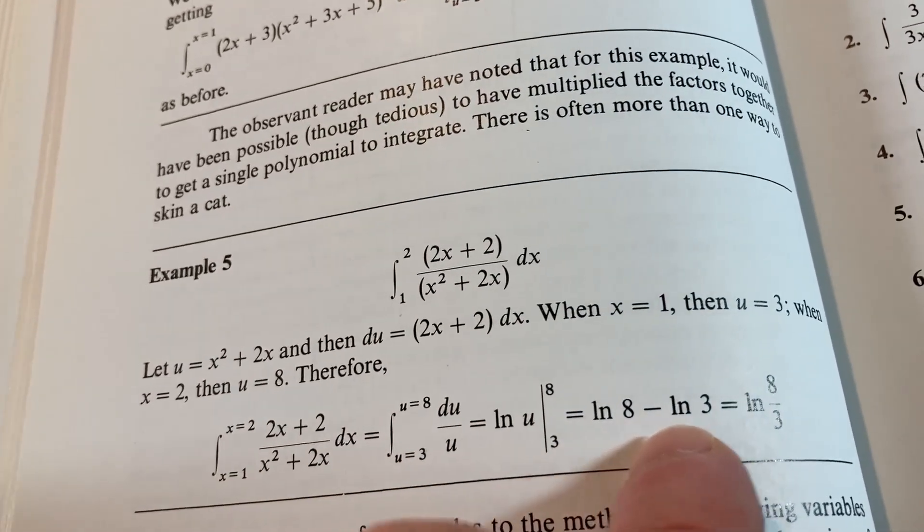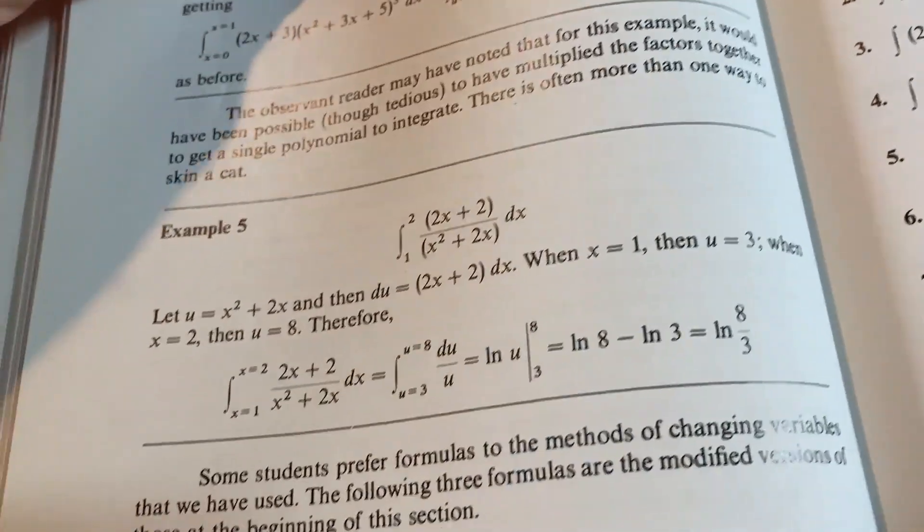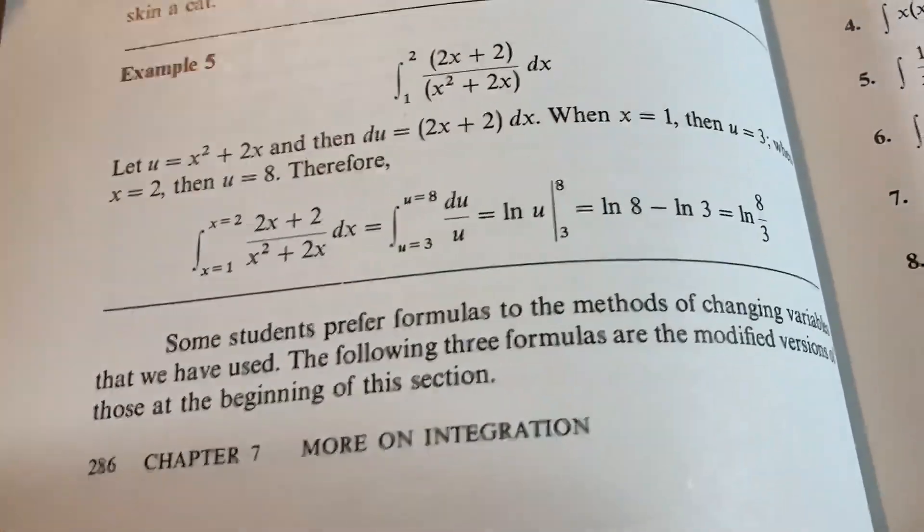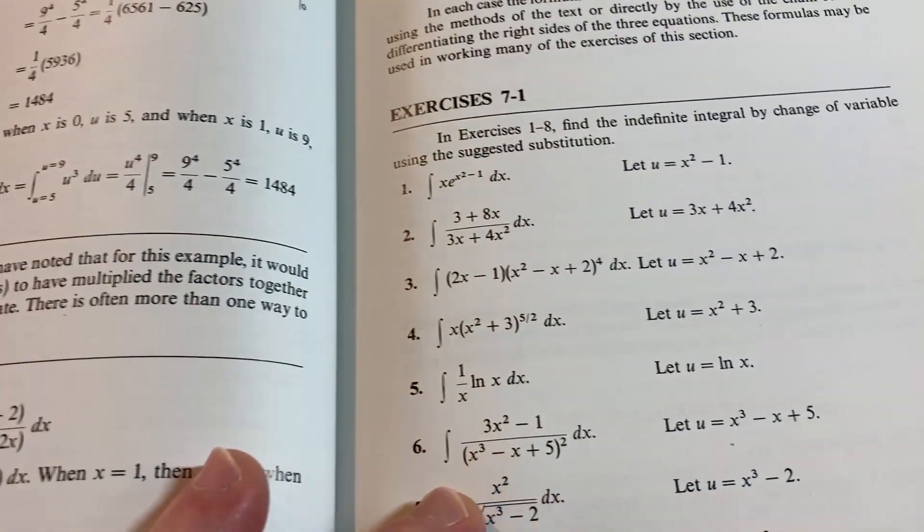This is a very famous integral. 1 over u is going to give you ln u, and you go from 3 to 8. Then you just plug in the numbers and subtract, and there's the answer. This step from here to here is using the quotient rule of logs. So it's just nice that the book has examples like that. And that's just one example.